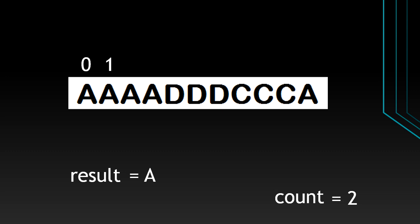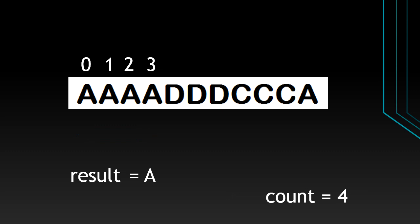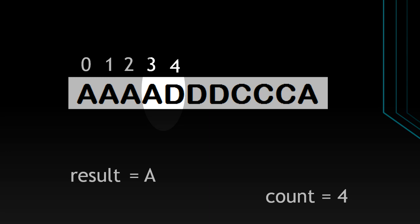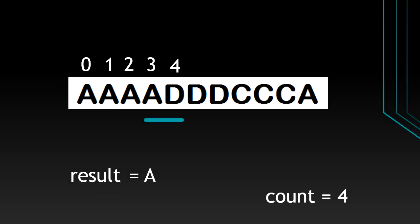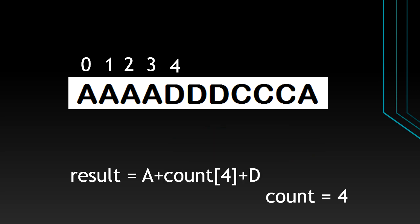Likewise, for iterations at index 2 and 3, we increase the count variable and there is no change in the result, because we are counting the run length for character 'a'. But when we are iterating for index 4, the character at index 4 and the character at index 3 are not the same. So in this iteration we need to update the result variable with the previous character's length stored from the previous iteration, then append the current character. After updating result with 'a's run length, we reset the count value to 1 because now the count indicates the run length of the new character.